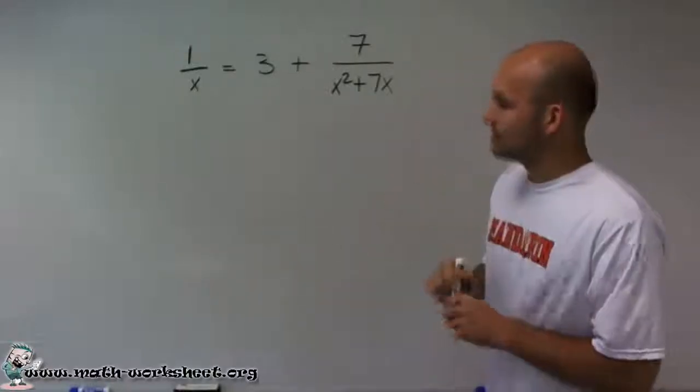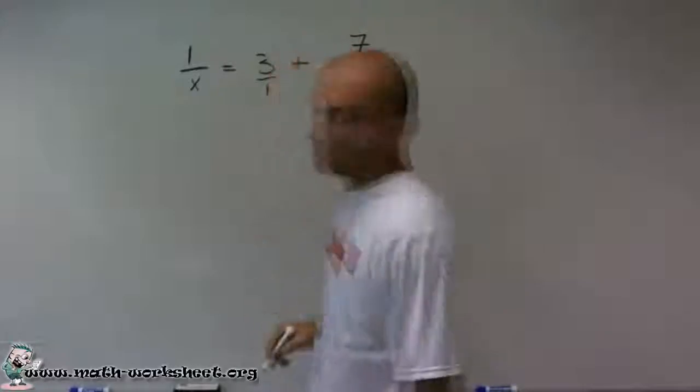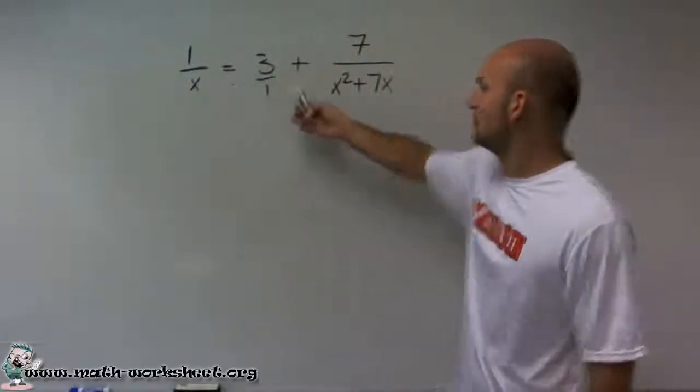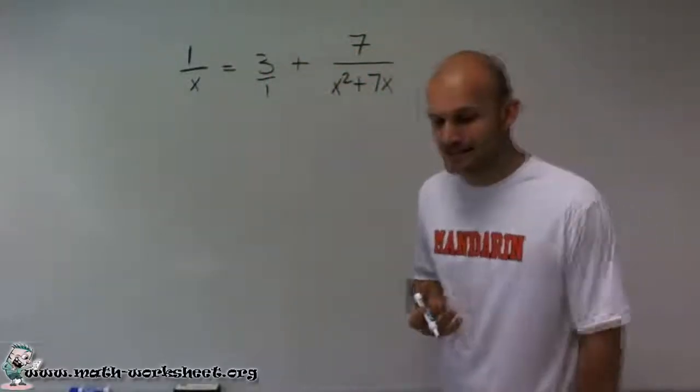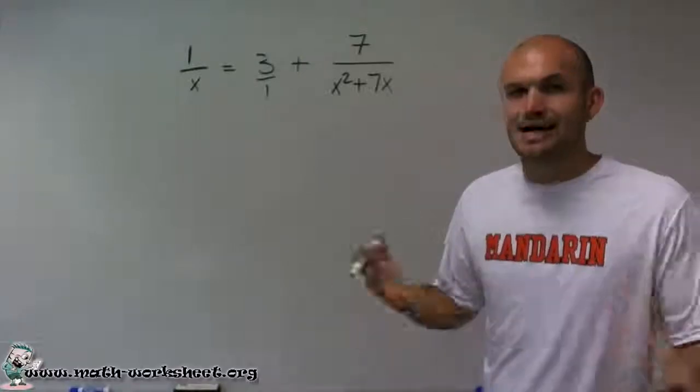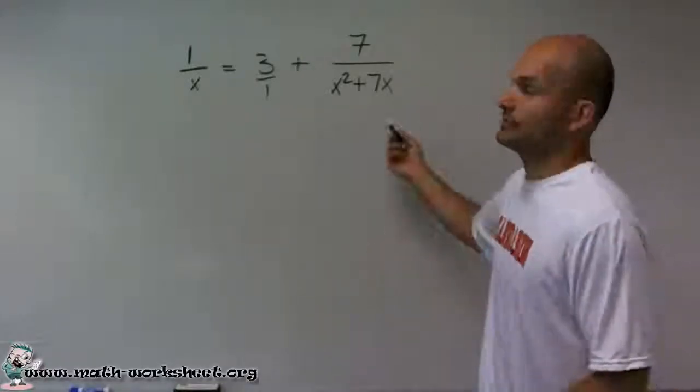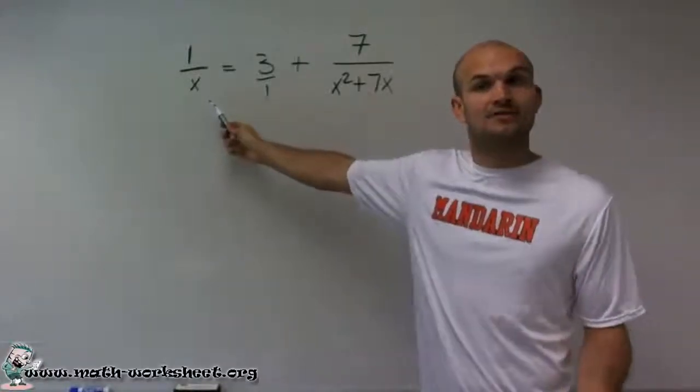So what I'm going to do is I need to look at what are all my denominators for all of my terms. Well, I have x, 1, x squared plus 7x. So a lot of times when finding the common denominators, what we could do is just multiply all the denominators by each other. And that would at least give us a common denominator.